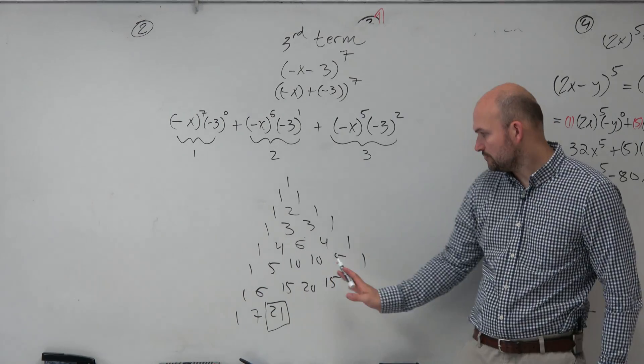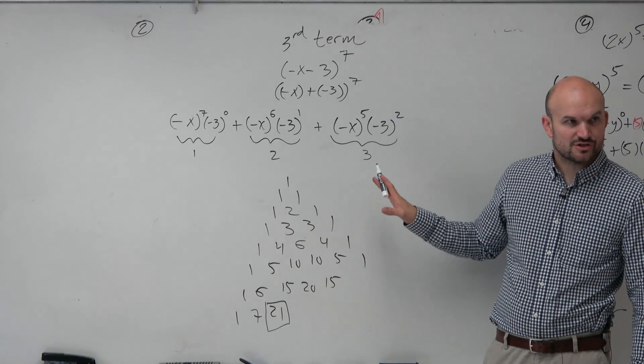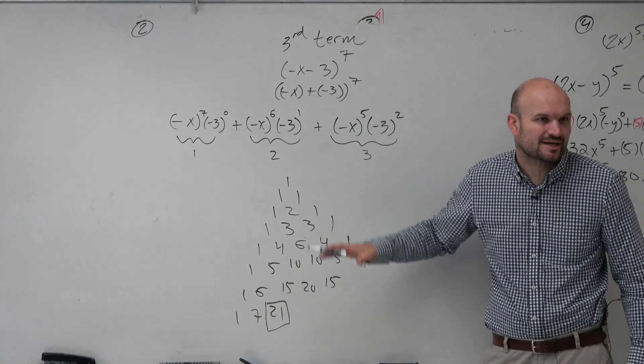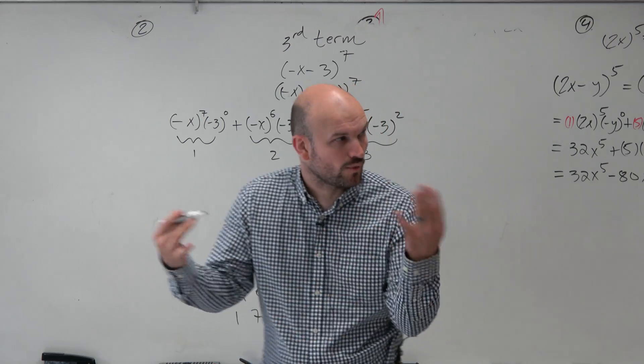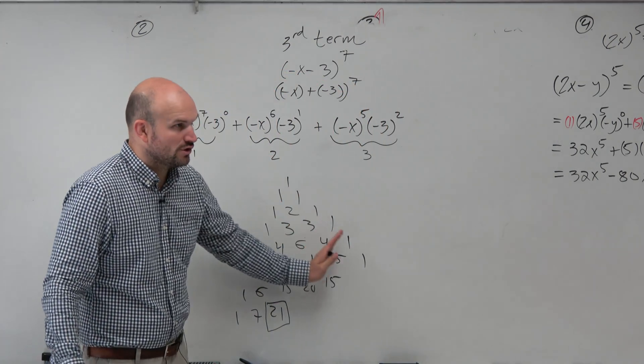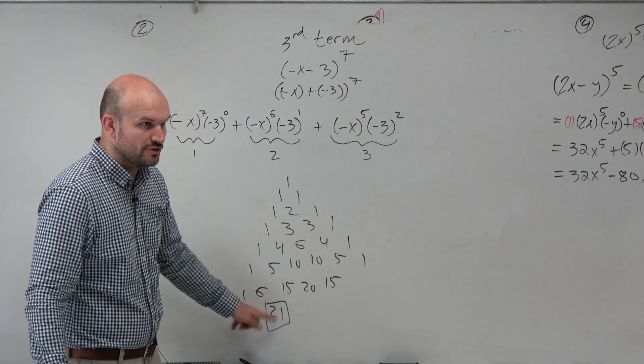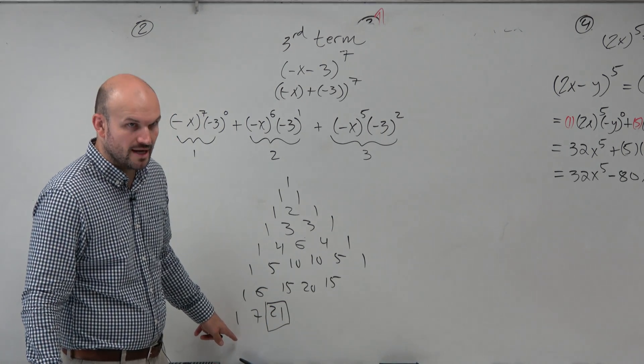Right? So you don't really even need to do like that side of Pascal's triangle in reality. I just did it because, obviously, I wanted to remind you of where it's coming from. But you can shorten your work. We just need to get to the third term in the seventh row. Right?